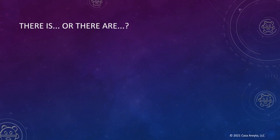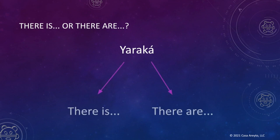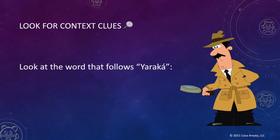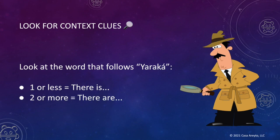You've seen this word before — it is yara ka. Yara ka can mean 'there is' or 'there are,' depending on the context. So how do you know which phrase it means? We can look for context clues. We look at the word that follows yara ka. If the word means one or less, we use 'there is.' If the word means two or more, then we use 'there are.' Simple enough, right?